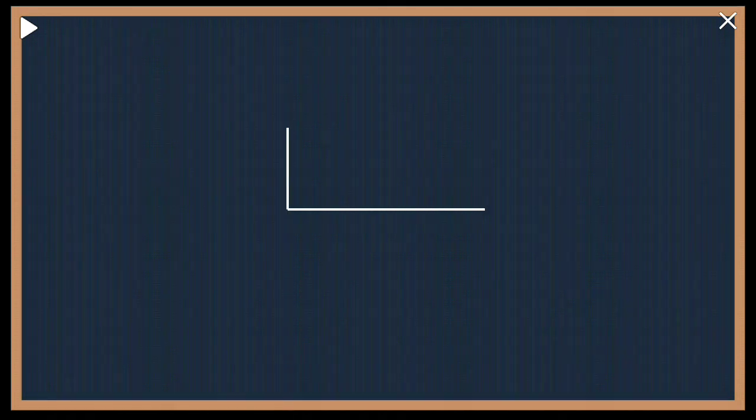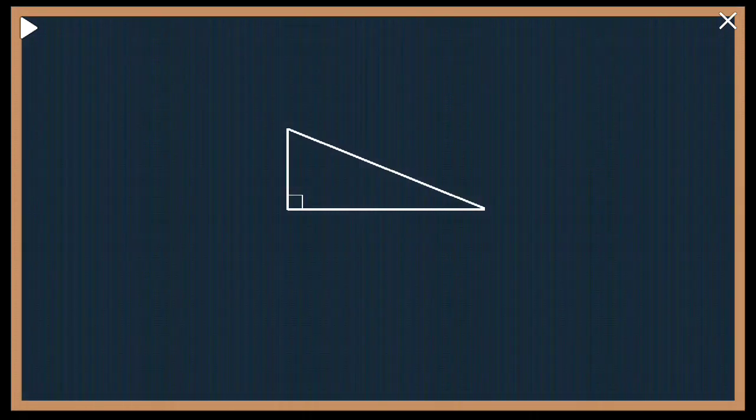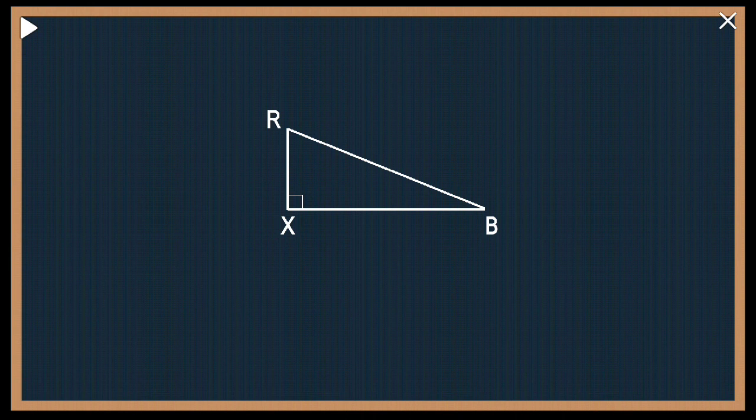Now I'm sure in the 7th standard you must have heard something about Pythagoras theorem. If not, let us understand what exactly it is. So he said that if you have a right angle triangle, let me give them names as R, X, and B. Note that RB is the hypotenuse of the triangle. Now how do I identify the hypotenuse? It is very simple. First locate which angle is 90 degrees, and exactly opposite to that is my hypotenuse. So here my hypotenuse is RB.